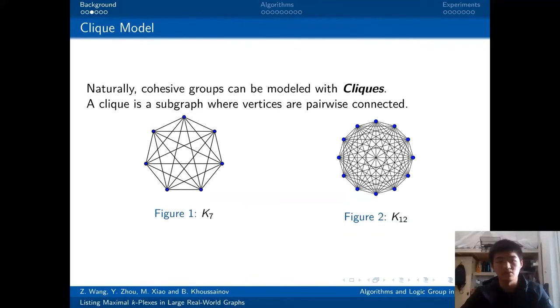In fact, cohesive groups can be modeled with graph theory. The most famous and well-studied model is the clique model. A clique is a subgraph where vertices are pairwise connected, that is a complete graph. As you can see below, the clique model is very simple and cohesive.